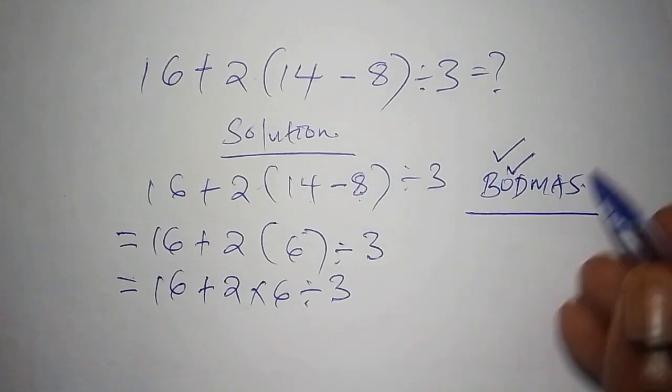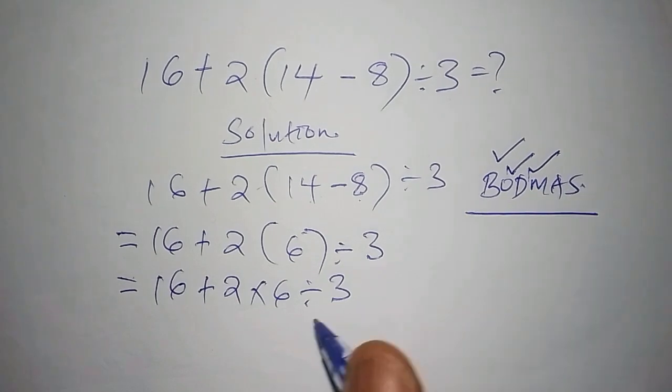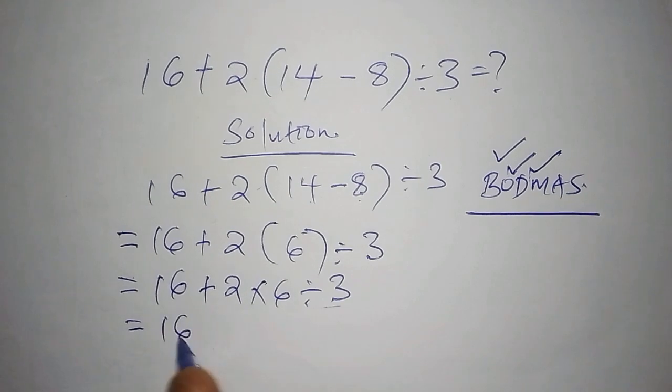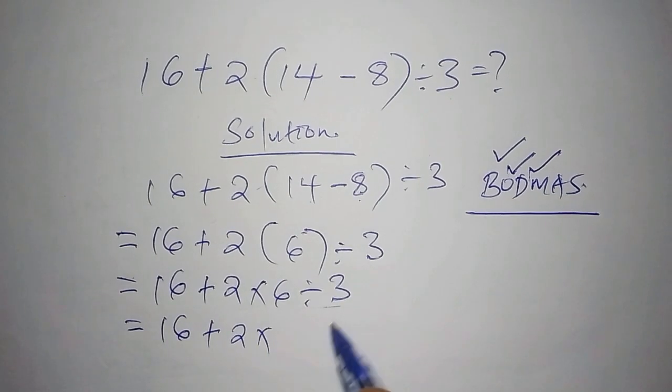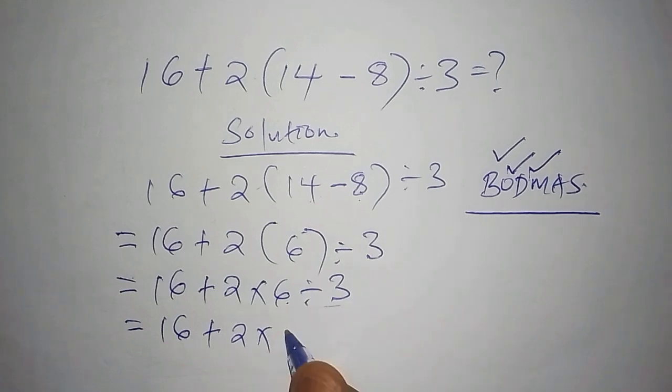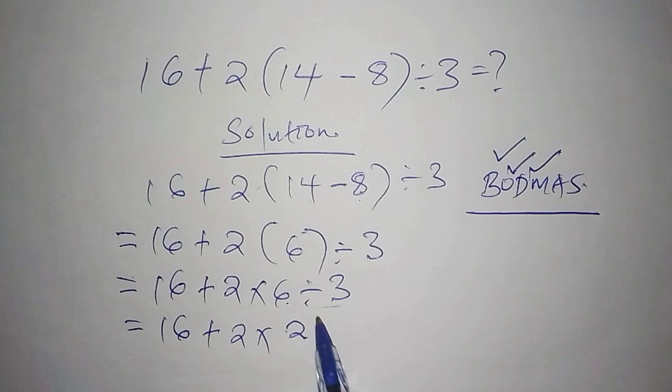We need to divide this one first, 6 divide by 3. So here we shall say 16 add to 2 then we multiply by 6 divide by 3, which gives us 2. We are now done with the division sign.